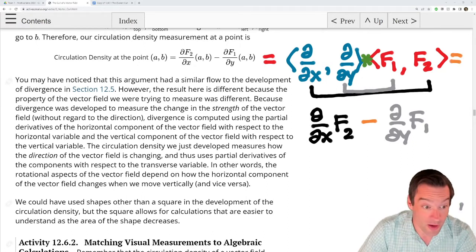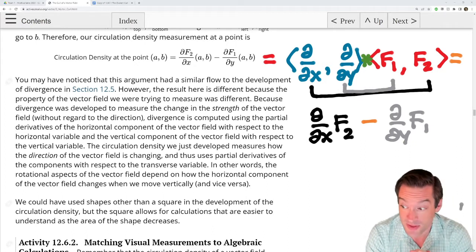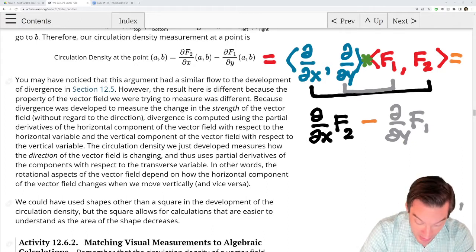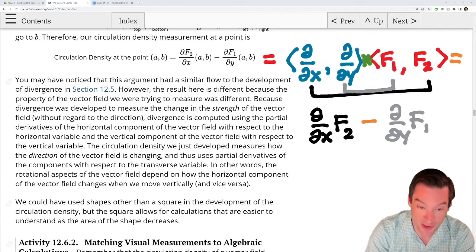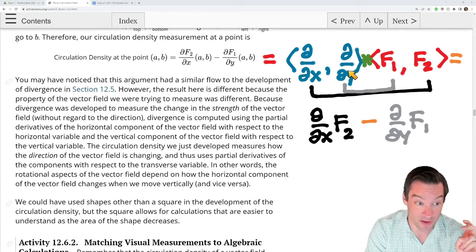So what the authors of our book call the circulation density, I like to call it the scalar curl just because this gives us a way of remembering how to compute this thing. It's a scalar cross product of this vector, quote unquote, that's made of these partial derivative operators d by dx and d by dy with the vector field f1, f2.